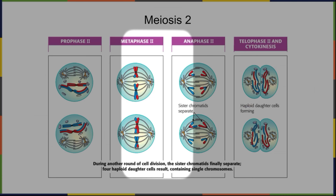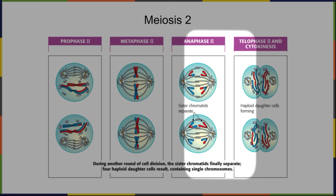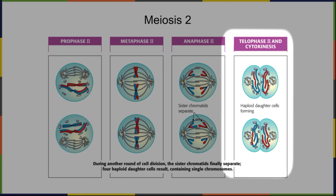In anaphase two, the sister chromatids are separated and pulled to each side of the cell. In telophase two, the cells divide through cytokinesis, producing haploid daughter cells. The end result of meiosis two is cells that have only a single copy of the genetic information that was present at the very beginning of meiosis. These haploid cells each have one copy of one chromosome — in our case, these become gametes: either sperm cells or egg cells.